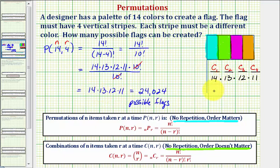Notice how this product is the same product we have here, using the permutation. This would be 24,024. So there is more than one way to solve this problem. I hope you found this helpful.